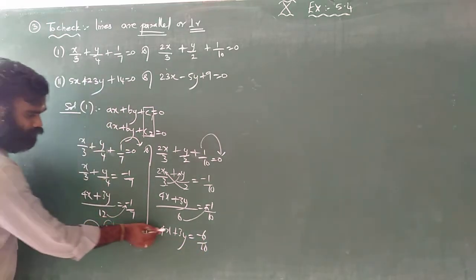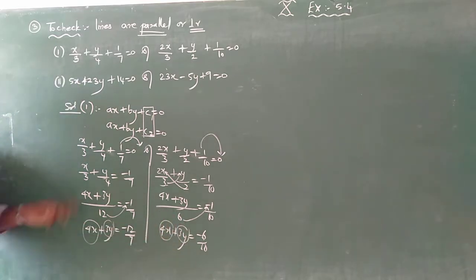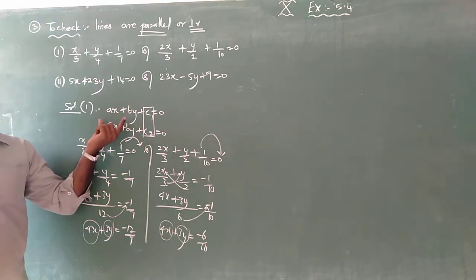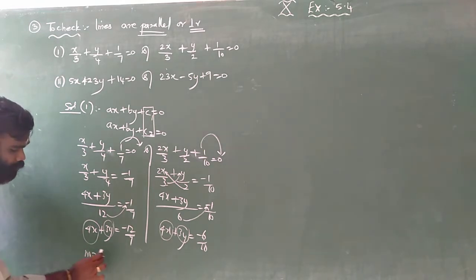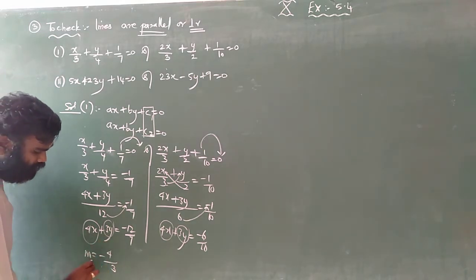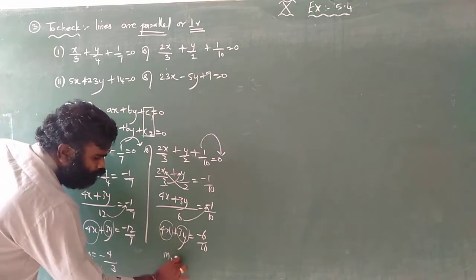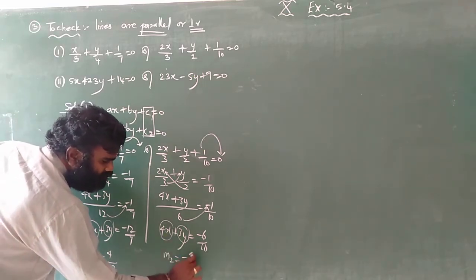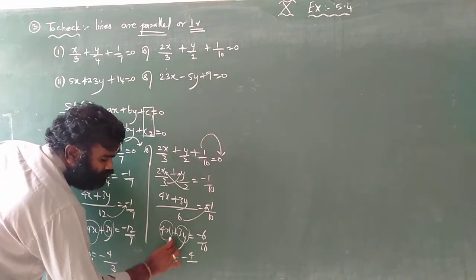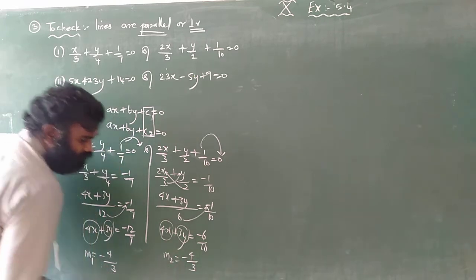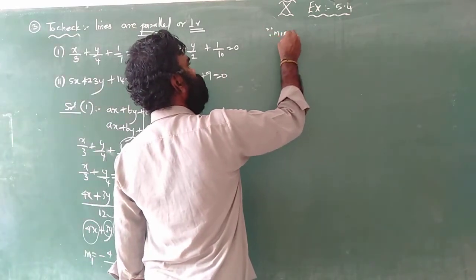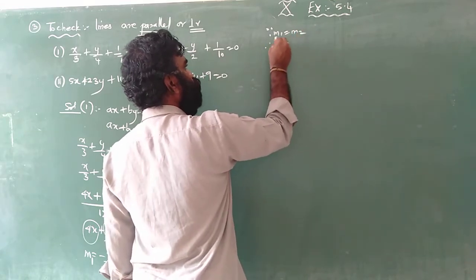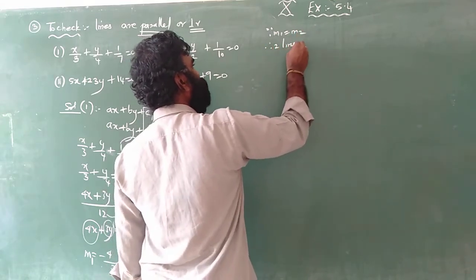Now comparing both equations in the form ax plus by, we need the coefficient of x and coefficient of y. The slope formula is m equals minus coefficient of x over coefficient of y. Coefficient of x is 4 and coefficient of y is 3, giving m1. Since m1 is equal to m2, therefore the two lines are parallel.